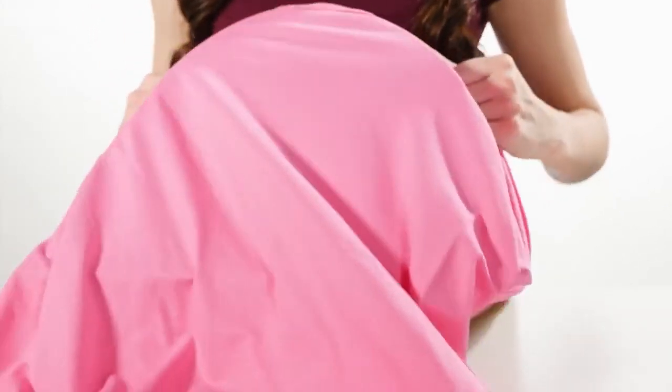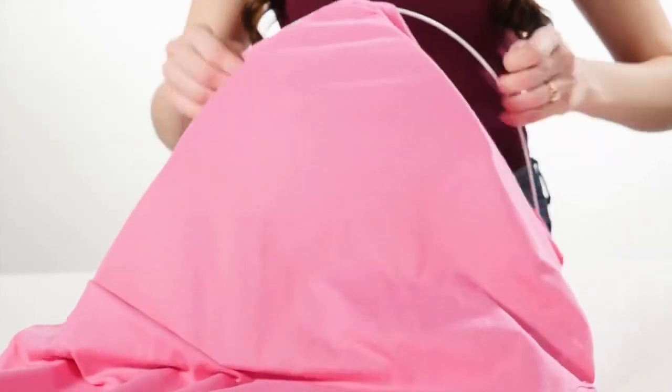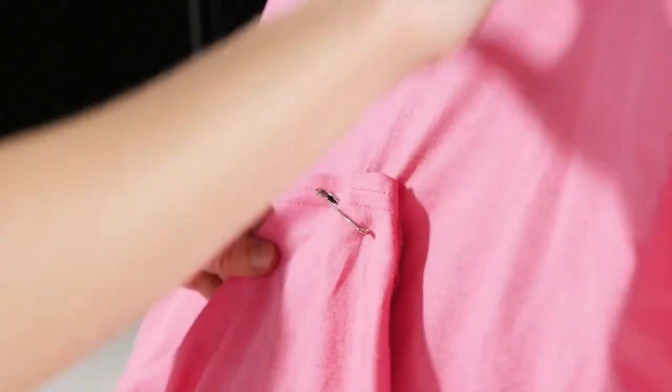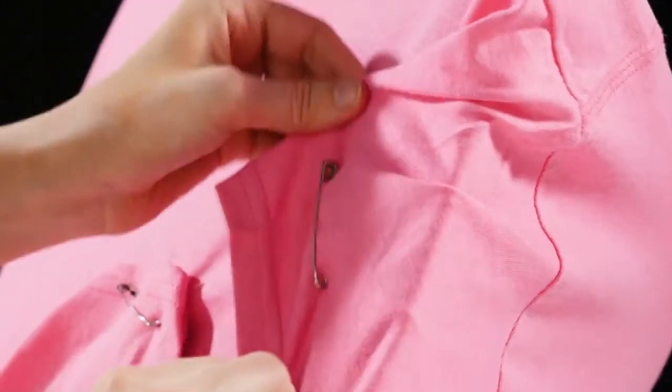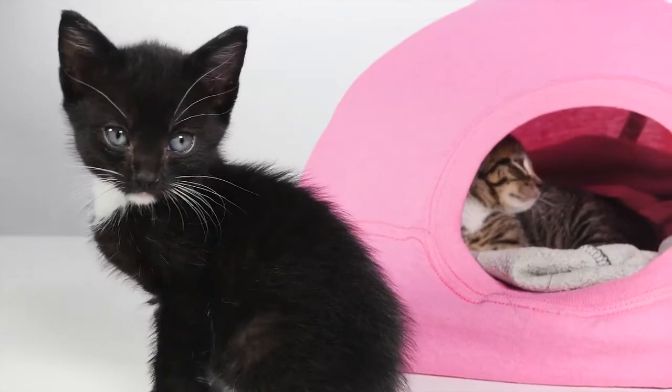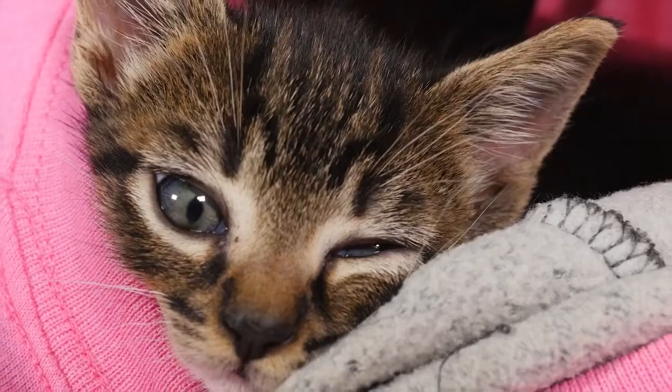Slide the t-shirt over the tent frame with the neck hole in front. Pin down the sleeves and bottom of the shirt so that there are no holes, and there you go. All you have to do now is add cats.